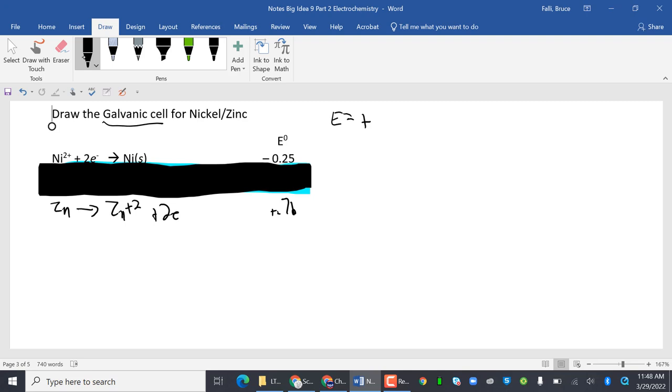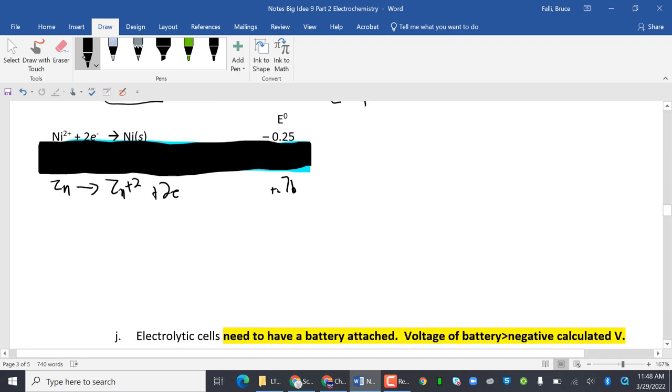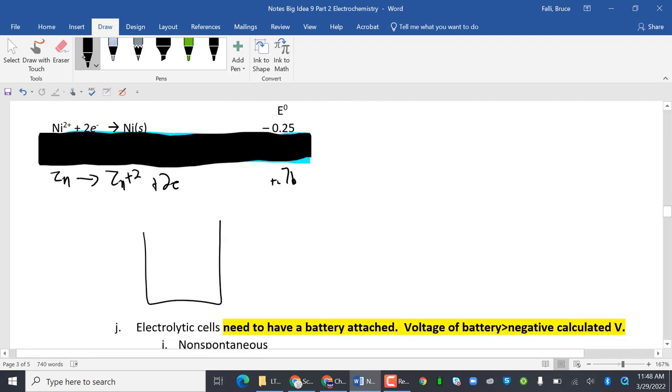Okay, so what I'm going to do now is draw the cell. So here we go. Metal, metal. I like to put my anode on the left. Anode does oxidation.